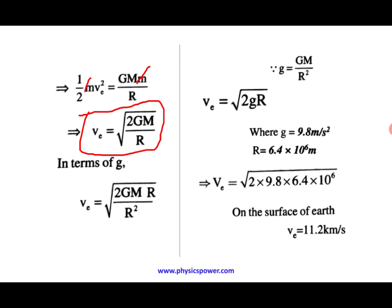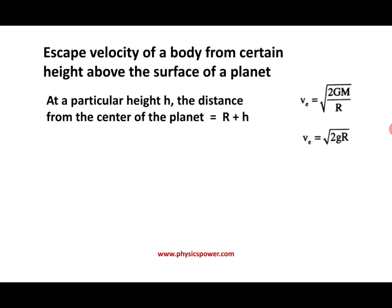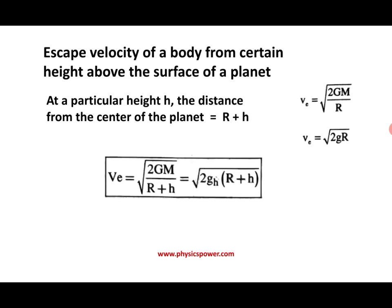This derivation was for the surface of the Earth. Now, for the escape velocity of a body from a certain height above the surface of the planet: the formulas derived — square root of 2GM/R or square root of 2gR — apply on the surface. If you consider a point at height H above the Earth's surface, the distance from the center of the Earth becomes R plus H. So instead of R, substitute R plus H, giving escape velocity VE equals the square root of 2GM divided by (R plus H). This is the escape velocity equation at height H.